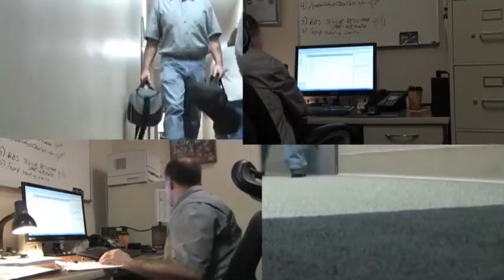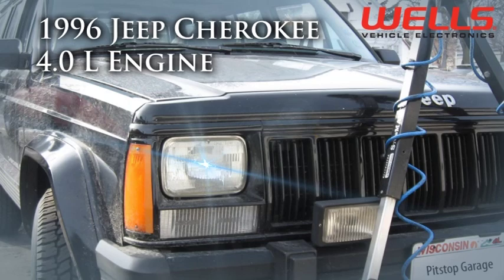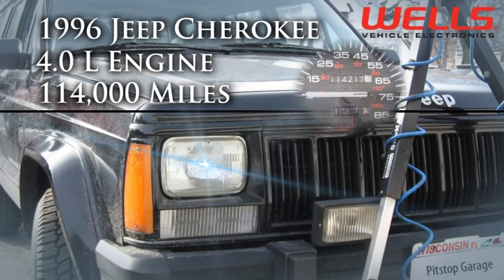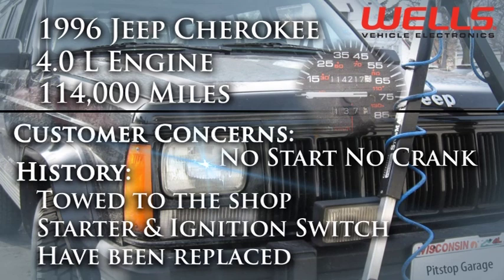We had a few minutes, so we grabbed the video equipment and went over to lend a hand. When we arrived there, there was a 1996 Jeep Cherokee with a 4.0 liter engine with about 114,000 miles on it in the shop. The owner of the vehicle has already replaced the starter and ignition switch with no success and then decided to have it towed.